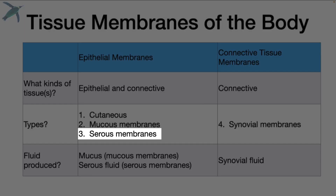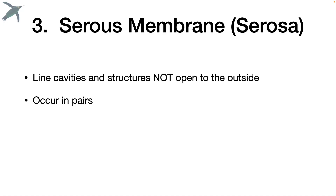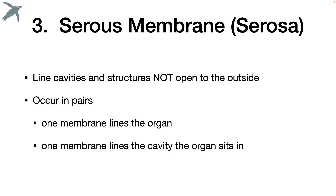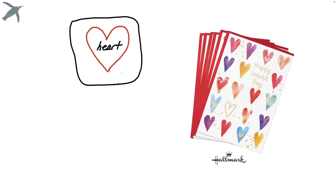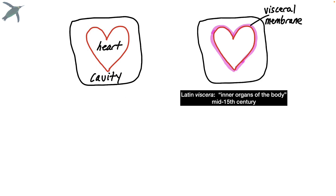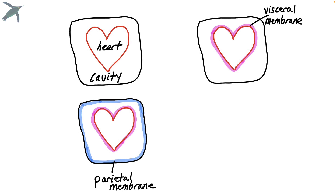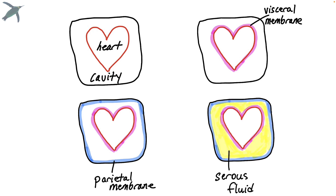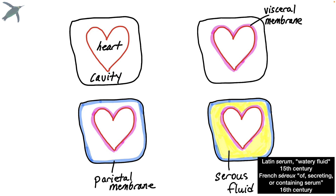Next we have serous membranes. Serous membranes line cavities and structures that are not open to the outside, and they occur in pairs. One membrane lines the organ itself, and one membrane lines the cavity that the organ sits in. Between the two, you will find serous fluid. So let's look at the heart — not an anatomical heart, but a hallmark heart. This is the cavity the heart sits in. Lining the surface of the heart itself, you will find the visceral membrane. Lining the cavity that the heart sits in, you will find the parietal membrane. Between the two, you will find serous fluid.